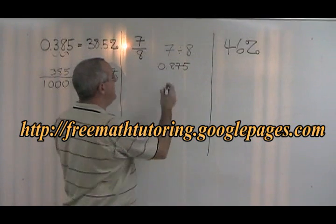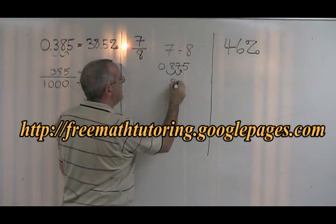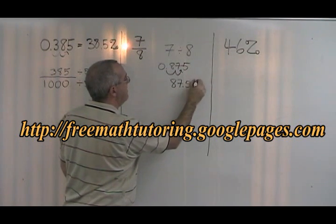To convert the decimal to a percent, we move that decimal two spaces to the right, and we get 87.5%.